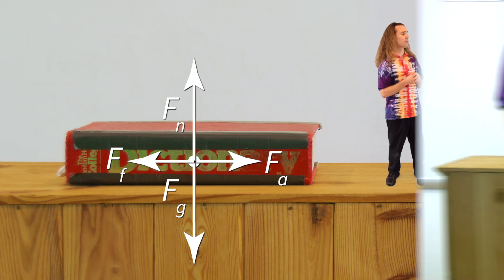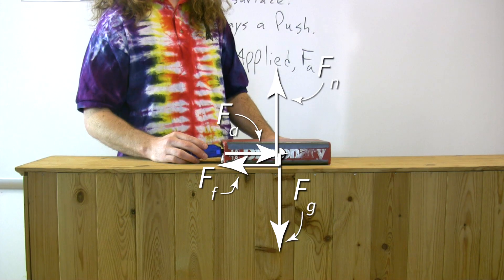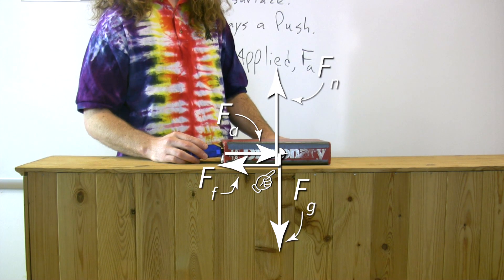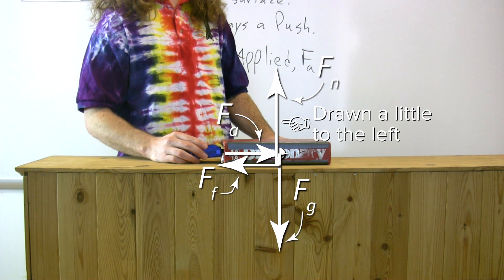This is what the free-body diagram really looks like. Because the force normal, force applied, and force of friction are all contact forces, they should all be drawn on the book at their points of contact. You can see that the force applied acts on the book where the force sensor is in contact with the book. And the force of friction and the force normal act on the book where the book is in contact with the surface of the table. In fact, we draw the force normal just a little bit to the left of where it should be, so that it doesn't overlap the force of gravity.